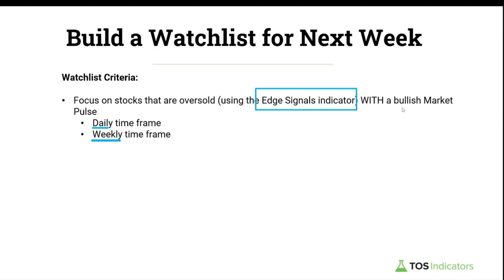Once we have that, we'd also like to make sure we have a bullish Market Pulse. Logically speaking, the idea is: give me a list of stocks that are currently oversold — in layman's terms, pulling back — where we have an overall longer-term bullish trend. That's using the Market Pulse, which is a free indicator. I'll link that in the description box in case you don't already have it.